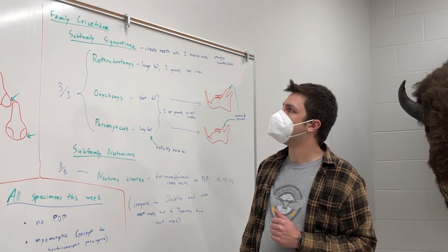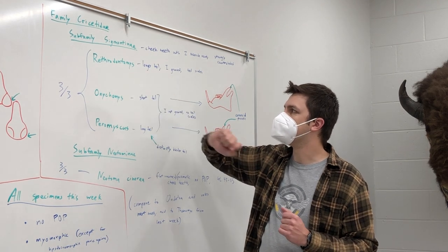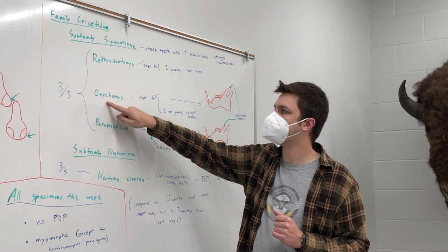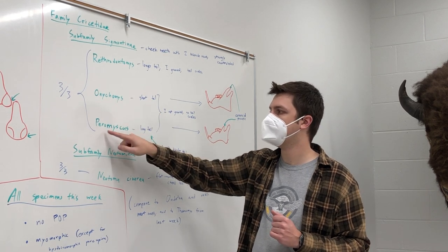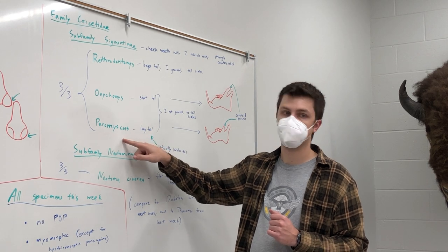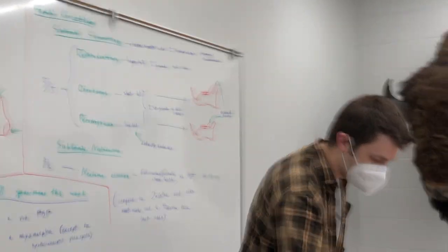So subfamily Sigmodontinae are the things that look like mice. So we have Reithrodontomys megalotis, this is the harvest mouse. Onychomys leucogaster, this is the grasshopper mouse. Peromyscus maniculatus, this is the deer mouse. So these all, they look like mice.